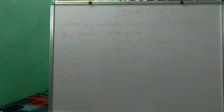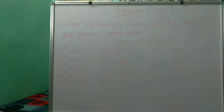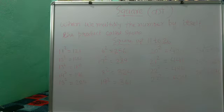So let's start. Square of 11, 121. Square of 12, 144. Square of 13, 169. Square of 14, 196. Square of 15, 225. Square of 16, 256. Square of 17, 289. Square of 18, 324. Square of 19, 361. Square of 20, 400.